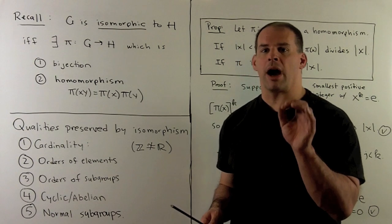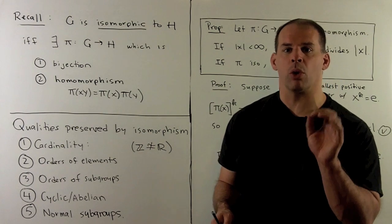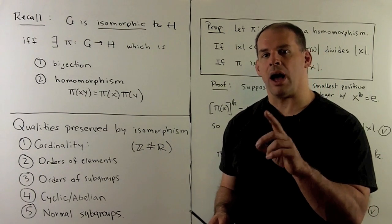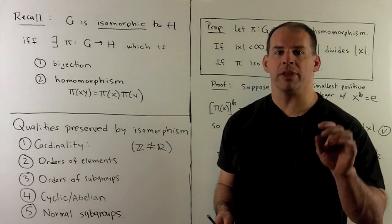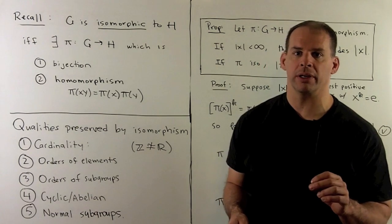We've investigated the problem of when two groups are isomorphic. Now we consider methods for showing that two groups are not isomorphic.